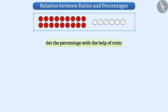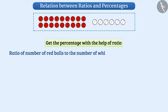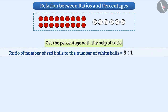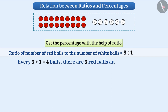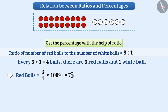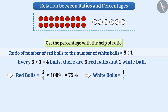We can also get the percentage with the help of ratio. The ratio of red balls to white balls is 3 is to 1, which tells us that in every 3 plus 1 equals 4 balls, there are 3 red balls and 1 white ball. So red balls are 3 divided by 4 multiplied by 100 percent, equal to 75 percent.